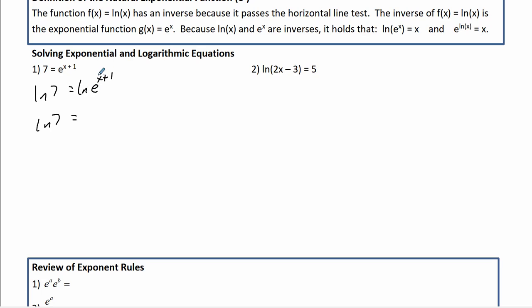Or technically, if it's ln of anything to a power, the power goes in front, and the ln of e is just 1, and 1 times that is just that. So we can think of it either way. And then I get ln(7) minus 1 equals x, and that's our answer for that one.